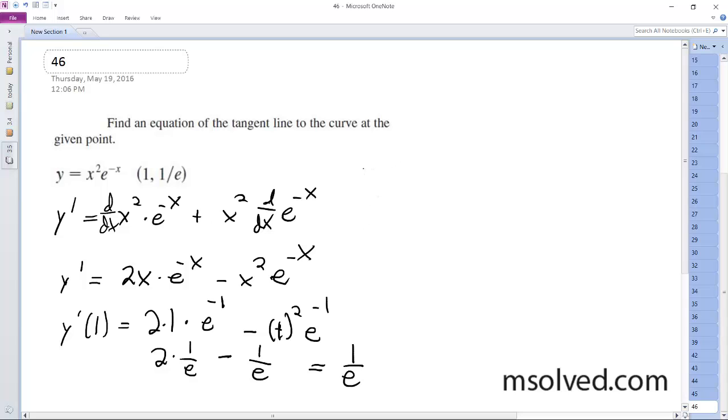Okay, so plugging into our point-slope form, we get y minus 1 over e is equal to 1 over e times x minus 1. So y minus 1 over e is equal to x over e minus 1 over e.